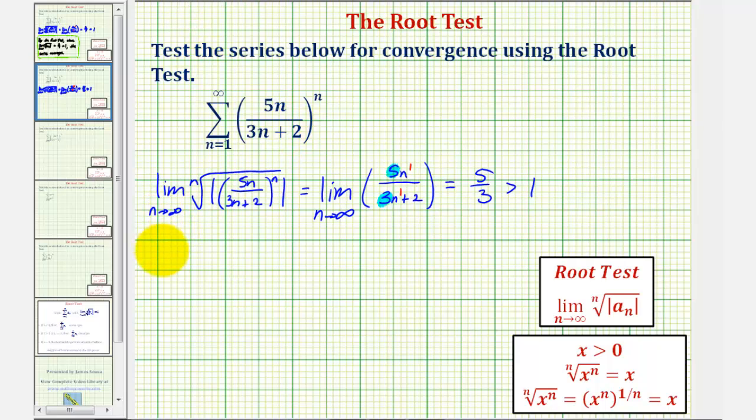So to summarize, by the root test, since the limit as n approaches infinity of the nth root of the absolute value of a sub n, in this case, equals five thirds, which is greater than one, the series diverges.